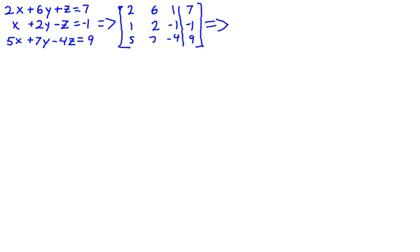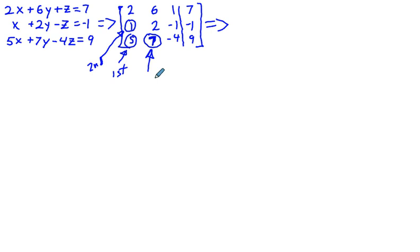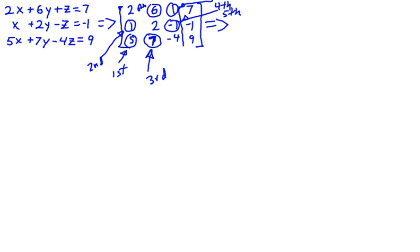The Gauss-Jordan elimination method performs eliminations in a particular order to be more efficient. We first eliminate the lower-left corner entry, then the entry above it, then the one below that. Those are our first three zeros. Then we handle the upper right area: the fourth, fifth, and sixth eliminations, in that order.